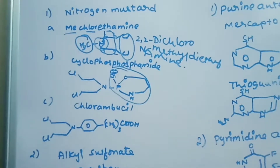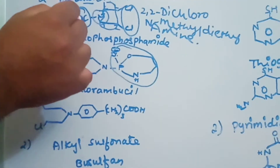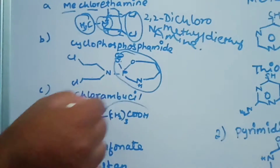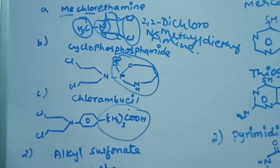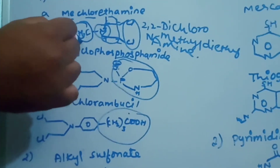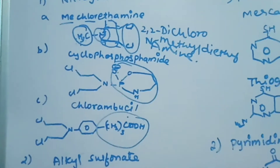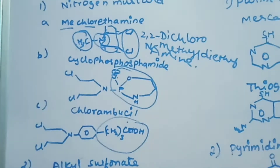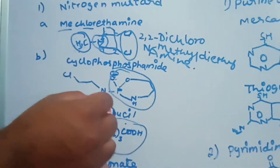The third example is chlorambucil. The structure again remains similar to mechlorethamine, but the methyl group is replaced by a benzene ring with a butanoic acid side chain — CH₂ three times followed by COOH — giving an aromatic ring structure containing butanoic acid.